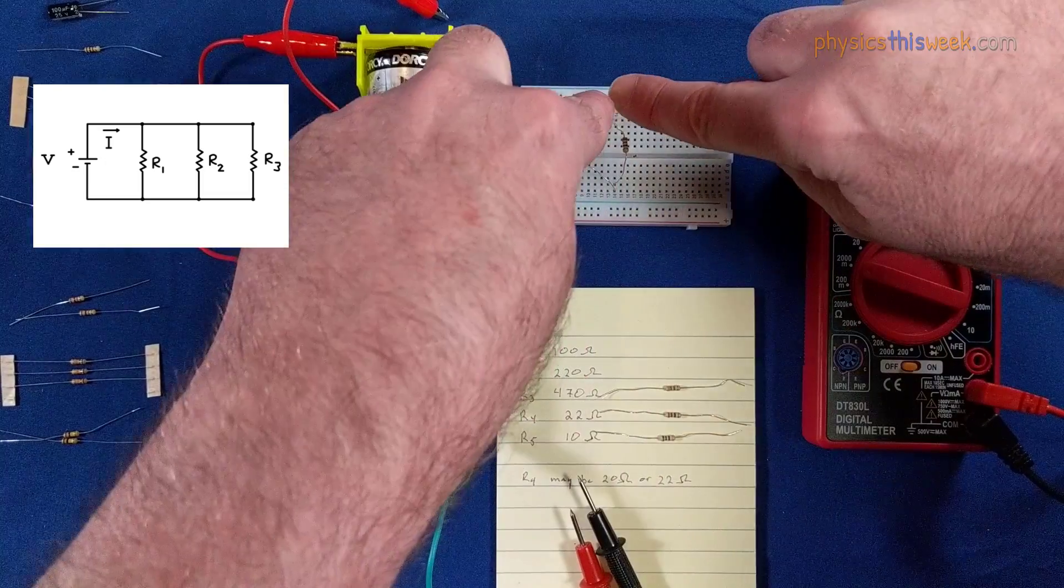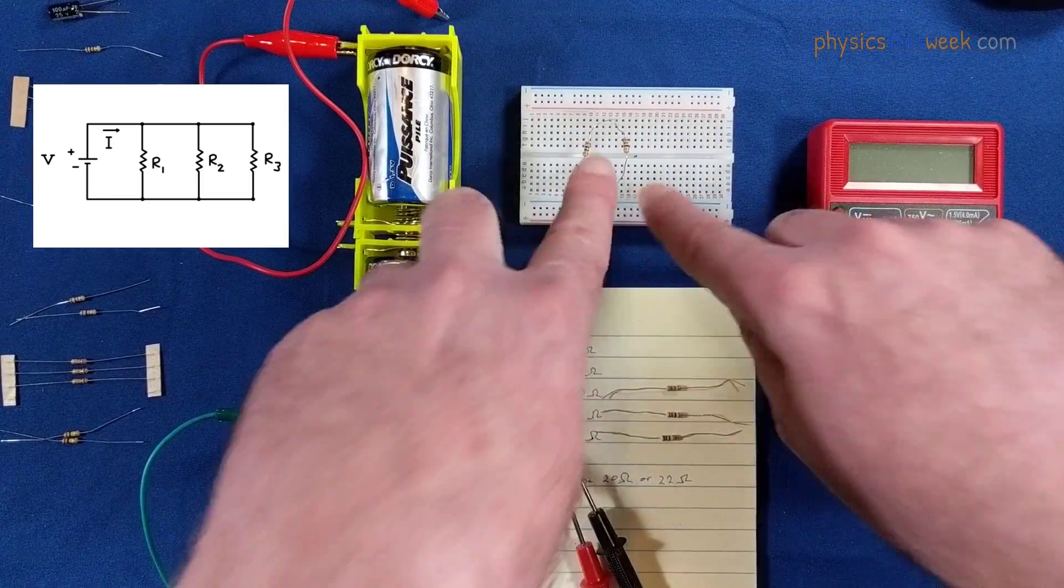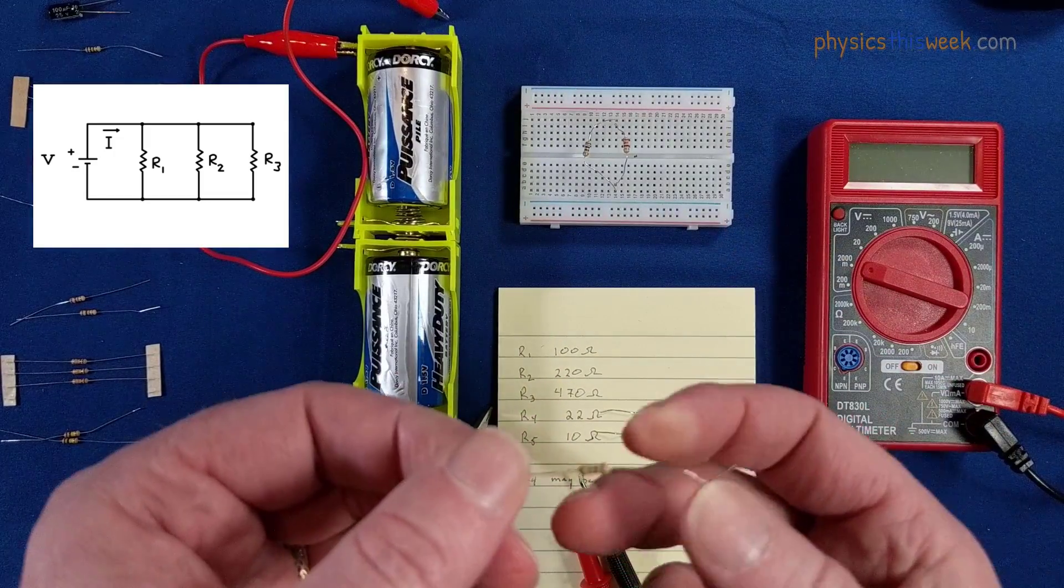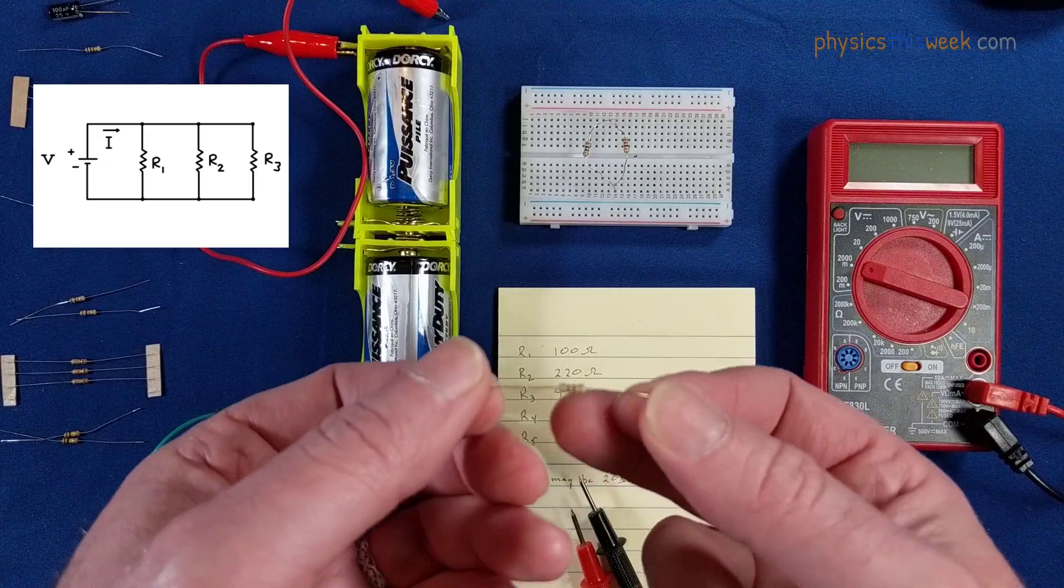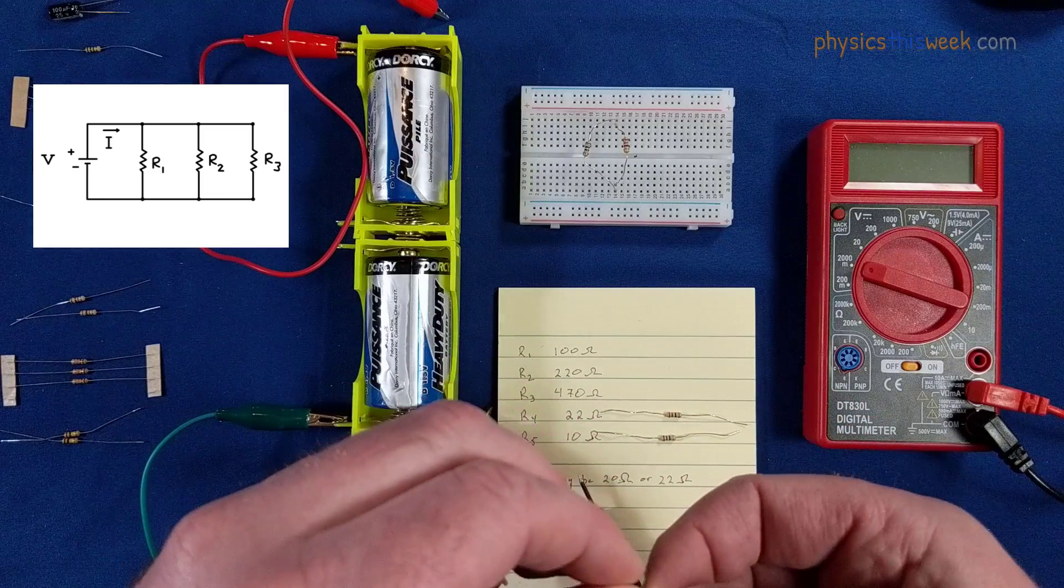Notice now that current coming in from this side can split, go both ways, and then come back together down here, meeting the definition of parallel. Resistor three is 470 ohms, so that's going to have yellow and purple in there.